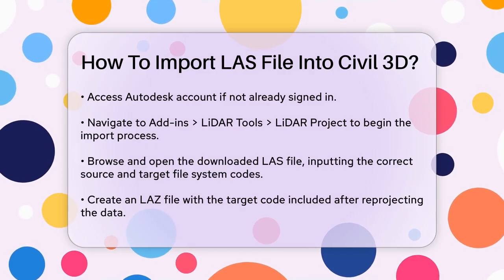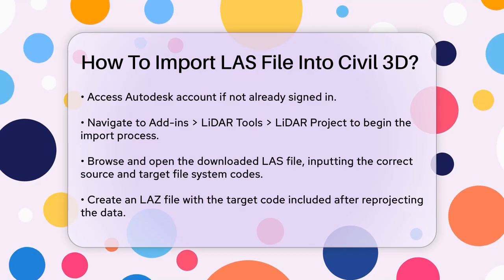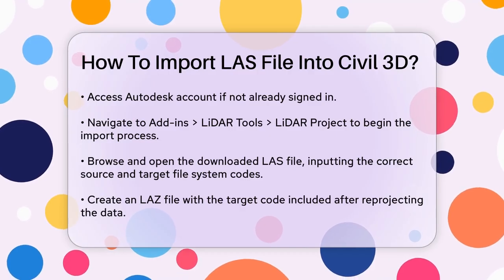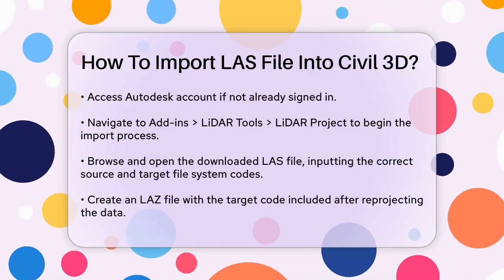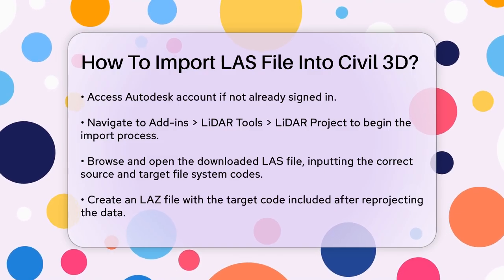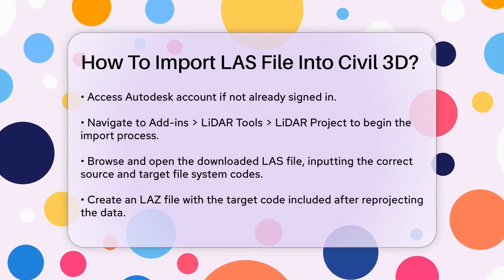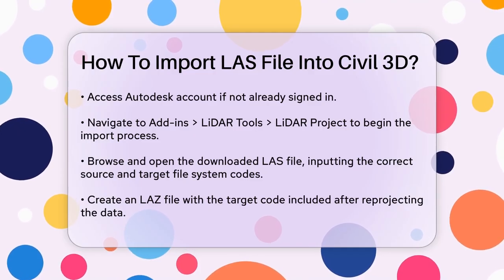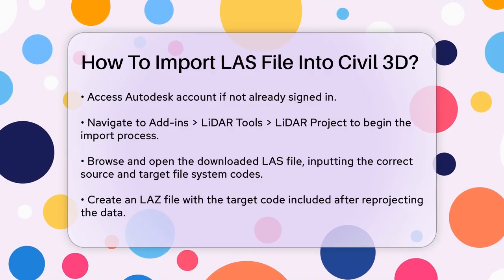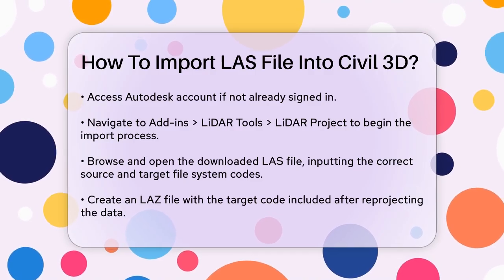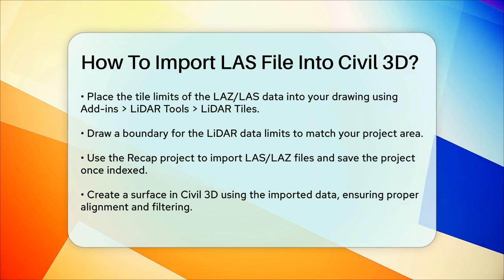For example, if your drawing is in UTM 8315 IF, enter this as the target code. This will create a LAS file with the target code included. After reprojecting the data, you need to place the tile limits of the LAS data into your drawing. Go to ADN's LiDAR Tools LiDAR Tiles, and use the tool palette to draw a boundary for the LiDAR data limits, ensuring it matches your project area.